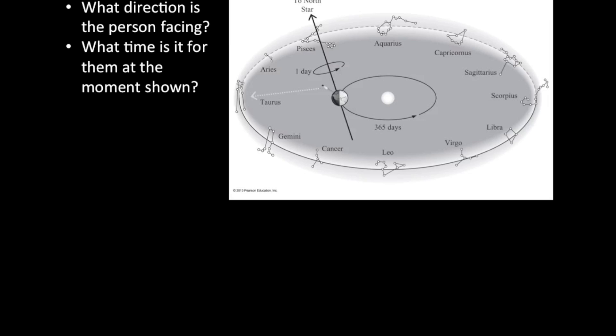And then, what time is it for the person shown on the Earth? Notice that they are a complete 180 degrees away from the Sun. If you're facing directly at the Sun, that would be local noon. And so, the time for this person facing directly away from the Sun has to be midnight.